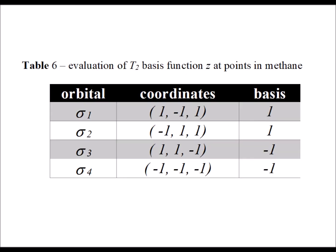Our third and final T2 basis function is z. We evaluate and tabulate in table 6, getting coefficients of plus 1, plus 1, minus 1, and minus 1. We just simply took the z coordinates, and that is the value of the basis function z at that particular point.